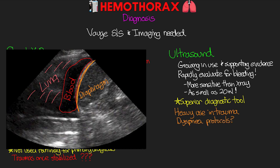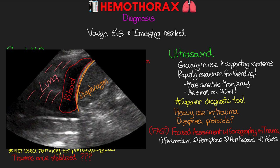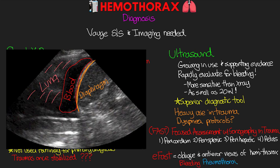In trauma we typically use something called the focused assessment with sonography and trauma, or the FAST scan. This takes a quick look with the ultrasound probe at four primary areas: the pericardium, the perisplenic, the perihepatic, and the pelvis, checking for bleeding in any of those compartments as these would be emergent situations requiring OR intervention. There is also the expanded E-FAST, which additionally includes oblique and anterior evaluations of the hemothorax, looking for dependent fluid as well as pneumothorax. With ultrasound we're able to quickly assess if the patient has bleeding or air in the pleural space.